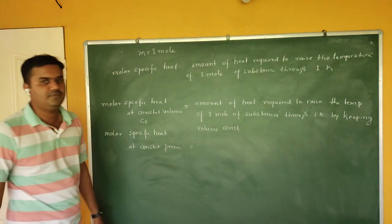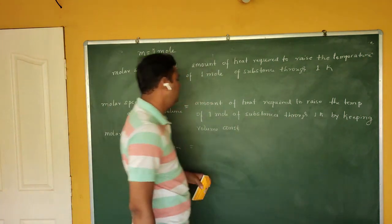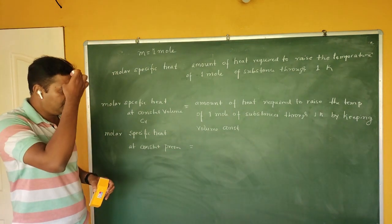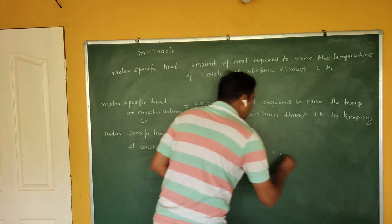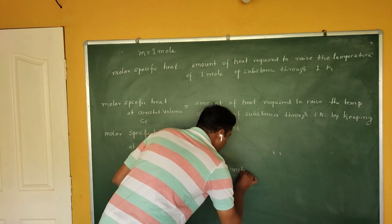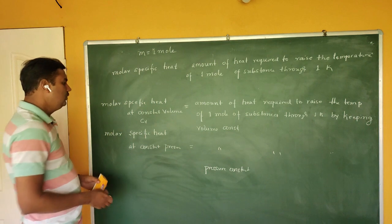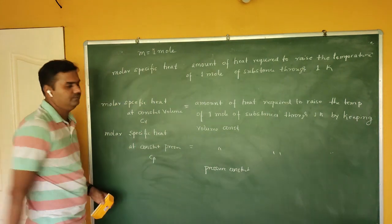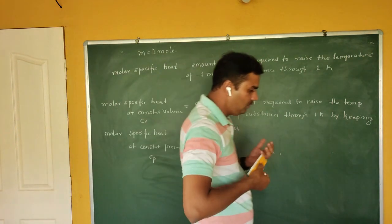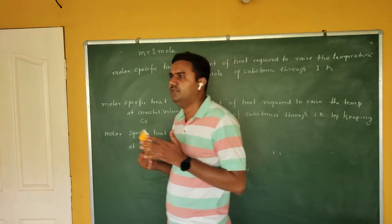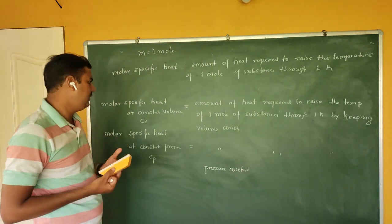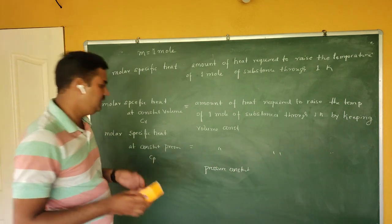The second molar specific heat is at constant pressure — called Cp. Its definition: amount of heat required to raise the temperature of one mole of substance by 1 Kelvin, keeping the pressure constant. Gases have two specific heats because the expansion depends on both pressure and volume, and the behavior differs depending on which quantity is kept constant.